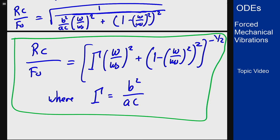This result depends only on the frequency and the coefficients of the problem, and it tells us how this amplitude is going to depend on frequency. We'll analyze what this looks like when we examine different values of gamma and how this function behaves over a range of different frequency values.